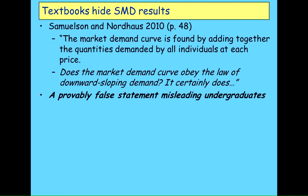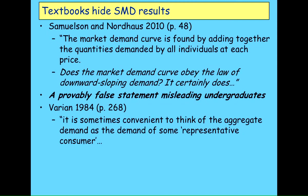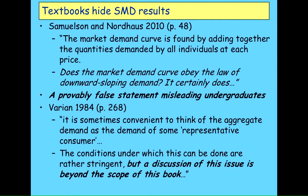Mas-Colell reproduces the same thing in his gargantuan textbook. When he talks about it, he says there's a positive representative agent, but to get a normative one, we must have redistribution prior to trade — redistribution by a benevolent central authority. And I'm not joking, this is in the book. That's apparently essential to make market demand curves exist. He writes: 'It is sometimes convenient to think of the aggregate demand curve as the demand of some representative consumer. The conditions under which this can be done are rather stringent, but discussion is beyond the scope of this book.' That's a reassuringly vague statement that lets PhD students continue going down the same path of delusion that Solow referred to earlier.